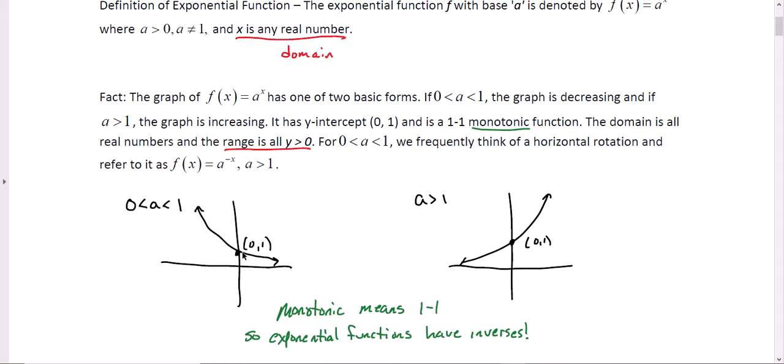The y-intercept is always at (0, 1), and it's 1-to-1. So it's a 1-to-1 function. It's going to have an inverse. Now monotonic, underlined here in green - monotonic, mono 1, one direction. Exponential functions have inverses. This is awesome.